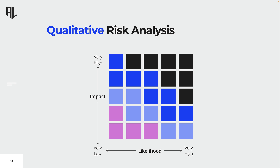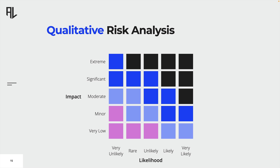In this example, you can see a risk matrix consisting of two dimensions: impact and probability. Each dimension has a scale indicating the severity of the impact and the likelihood of the risk. The impact has the following levels: minor, moderate, significant, and extreme. The likelihood can be classified as very unlikely, unlikely, likely, and very likely. Each combination of impact and probability represents a certain level of risk — in this example, we have four levels: low, medium, high, and major. Impact and likelihood are the risk evaluation criteria that help us determine the corresponding risk levels.